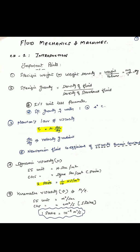Next, Newton's law of viscosity: tau is equal to mu into du divided by dy. Here, du/dy is the velocity gradient. For a Newtonian fluid, the coefficient of viscosity remains constant.